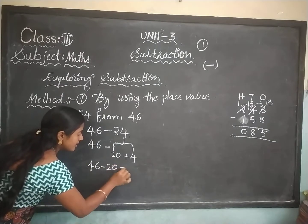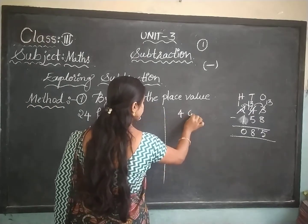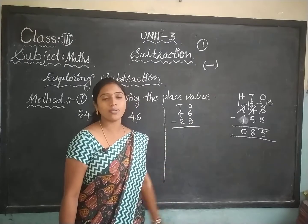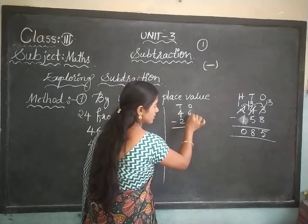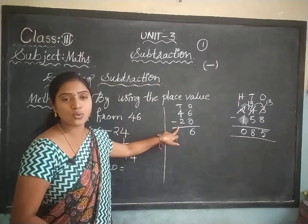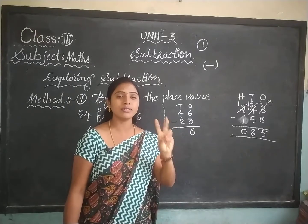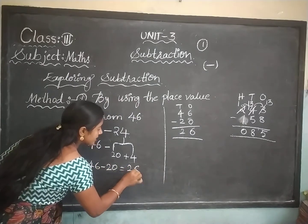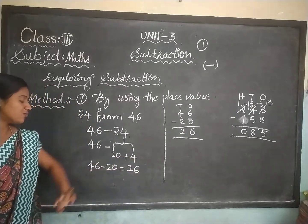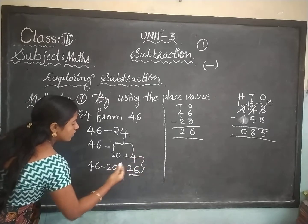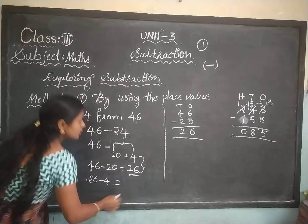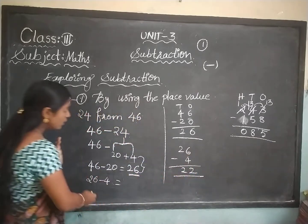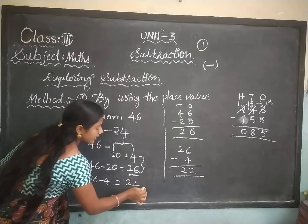46 minus 20: this is the ones place, this is the tens place. In the ones column, 6 minus 0 — because 0 we cannot count, so it stays as 6. And 4 minus 2: count 2 numbers before 4 — 3, 2. So 46 minus 20 equals 26. Next, 26 minus 4. In the ones place, 6 minus 4 equals 2; the tens digit 2 stays as it is. So 26 minus 4 equals 22. The answer is 22.